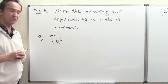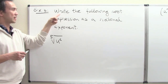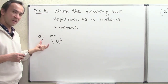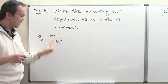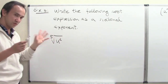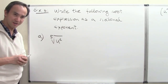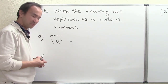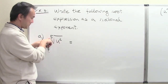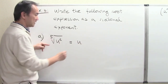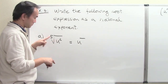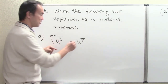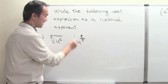Now in Example 3, the instruction says: write the following root expression as a rational exponent. In part A, we have u squared inside a fifth root — the fifth root of u squared. From our general understanding, the fifth root becomes the denominator of our rational exponent, and the power 2 becomes the numerator. So the answer is u to the 2 fifths power.